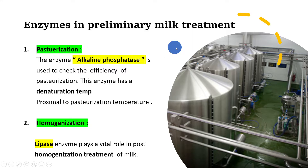The alkaline phosphatase enzyme has a denaturation temperature that matches the pasteurization temperature. This means if pasteurization is done properly at the correct temperature, the enzyme will be denatured and inactivated. When we add a chemical substrate such as phenyl phosphate to the milk sample, if the alkaline phosphatase is absent, the test will be negative — indicating that pasteurization is complete and the enzyme has been fully denatured.